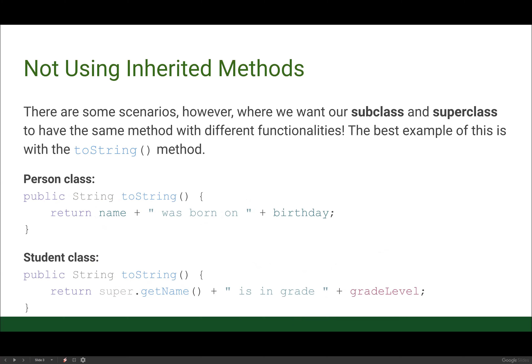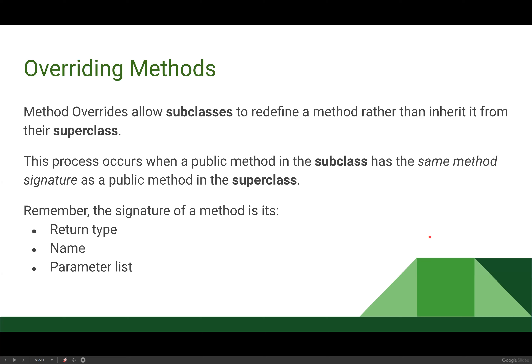This is a different representation across the two different classes, and this idea is called overriding methods. Method overrides allow our subclasses to redefine a method instead of inheriting it from their super class. This process happens when a public method in the subclass has the exact same method signature as a public method in the super class. Remember the signature for a method is its return type, its name, and its parameter list. If all three of those things are the same, the method will be overridden.